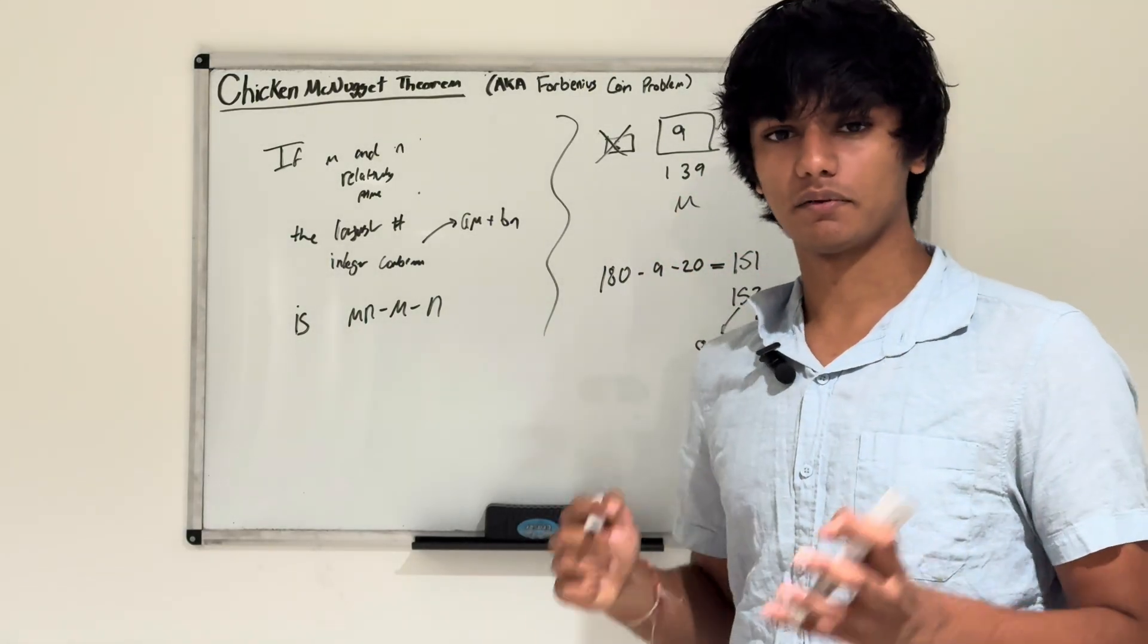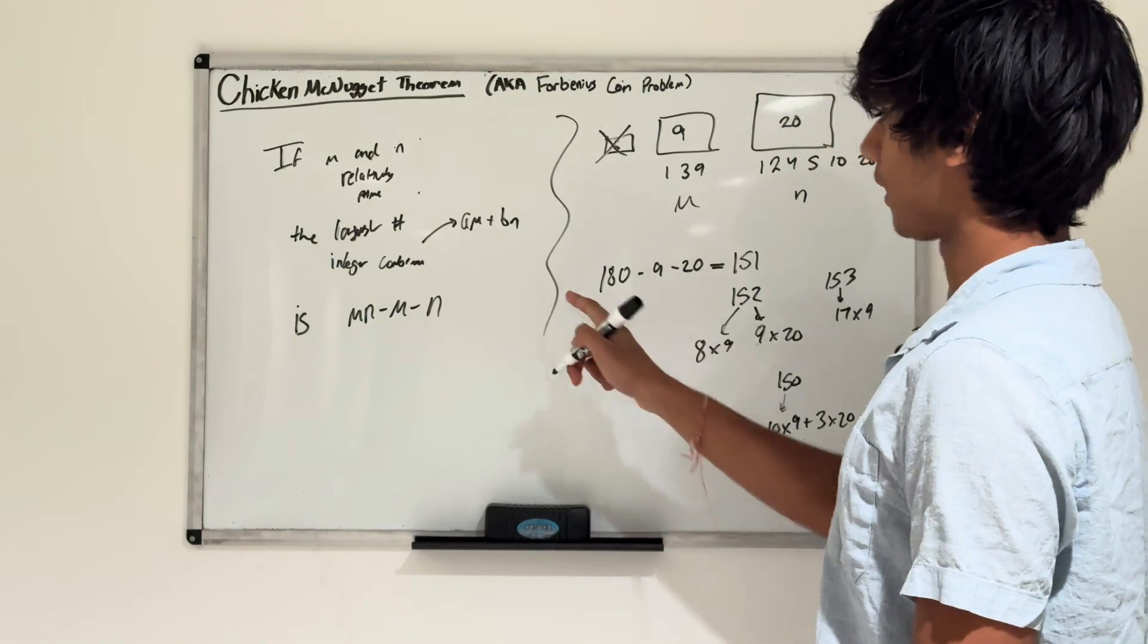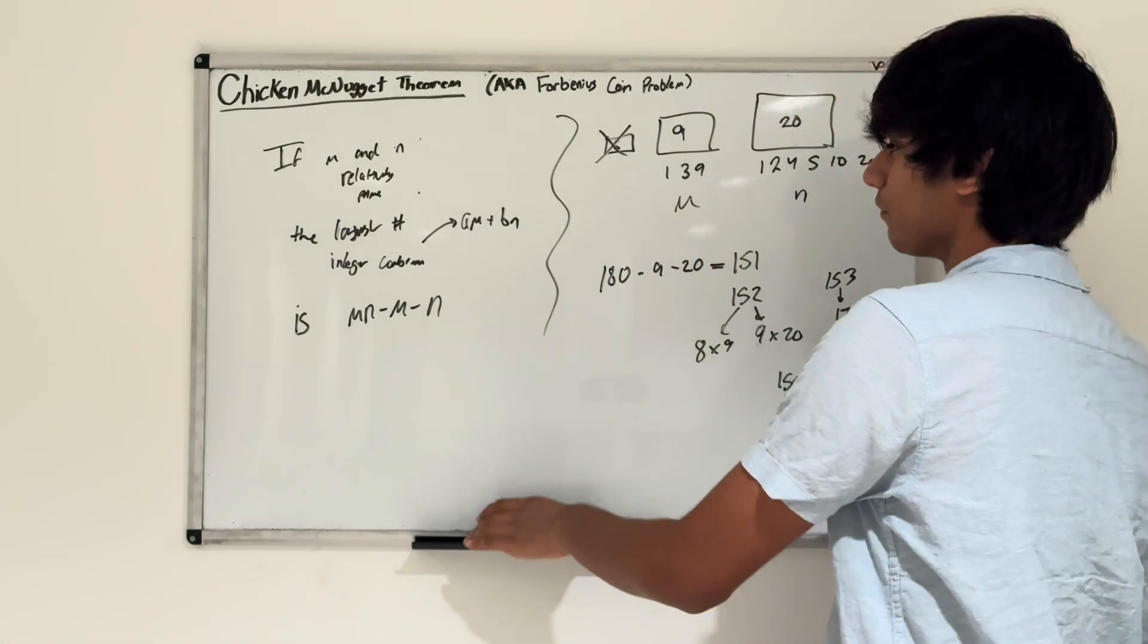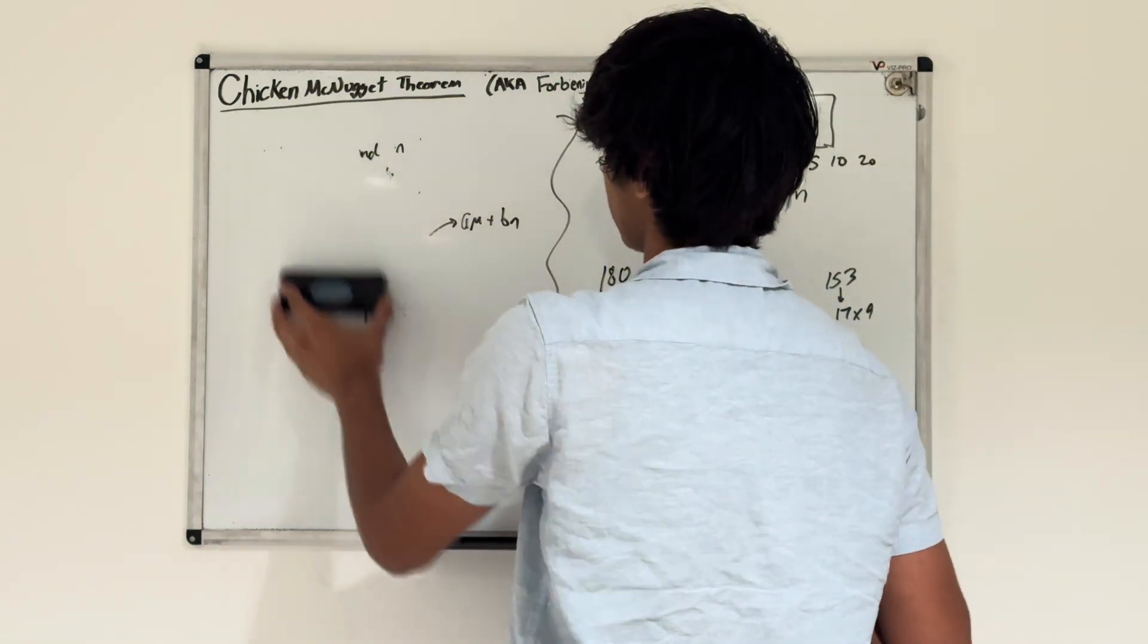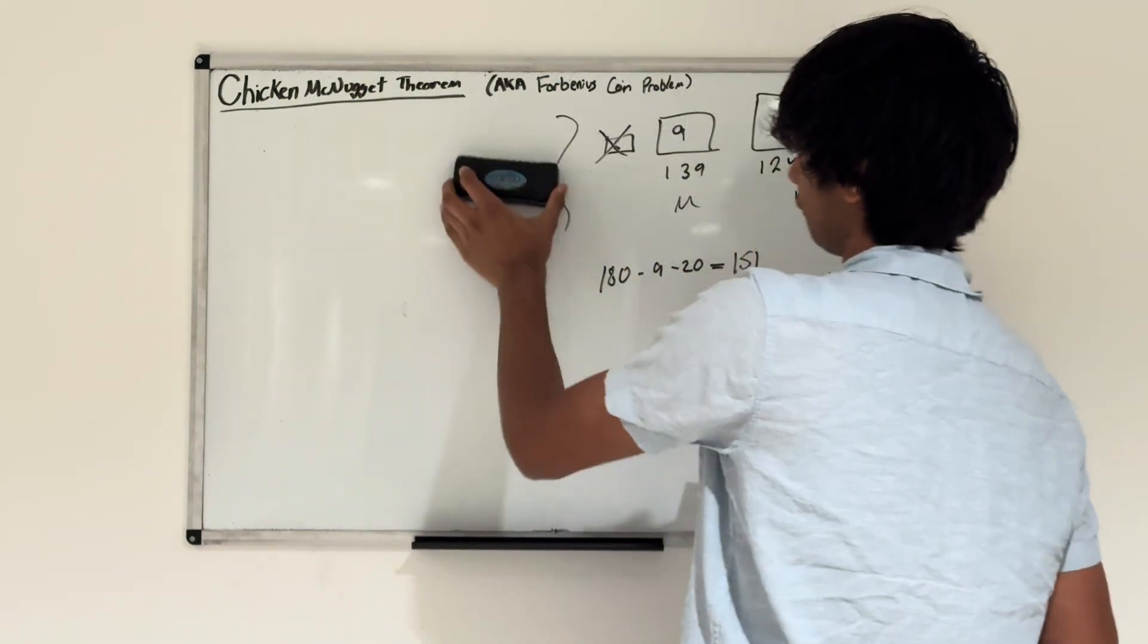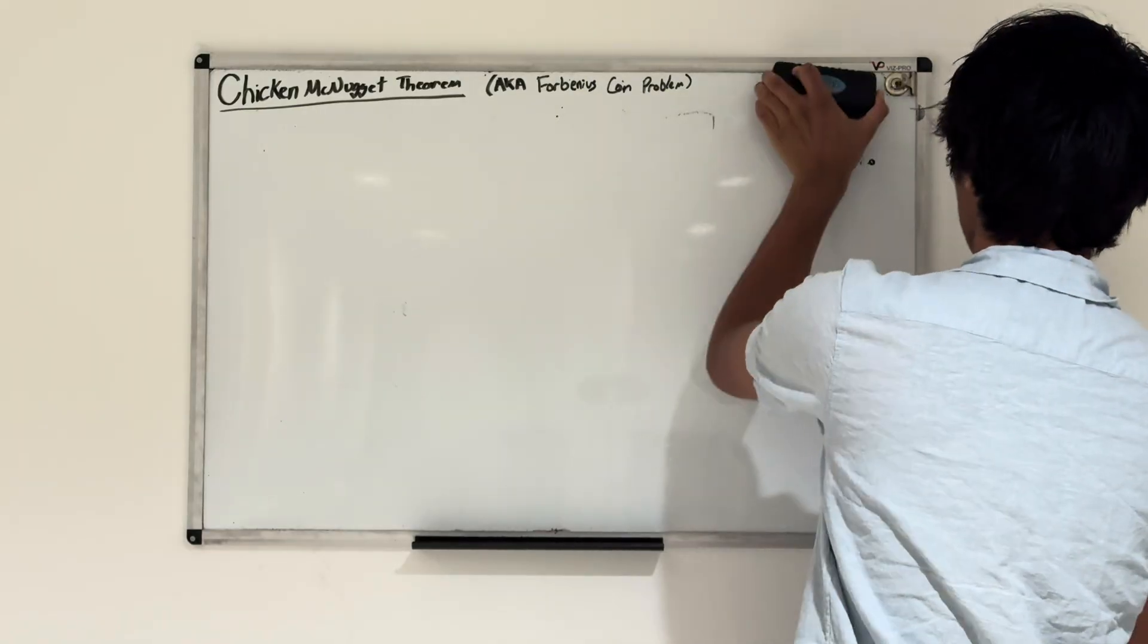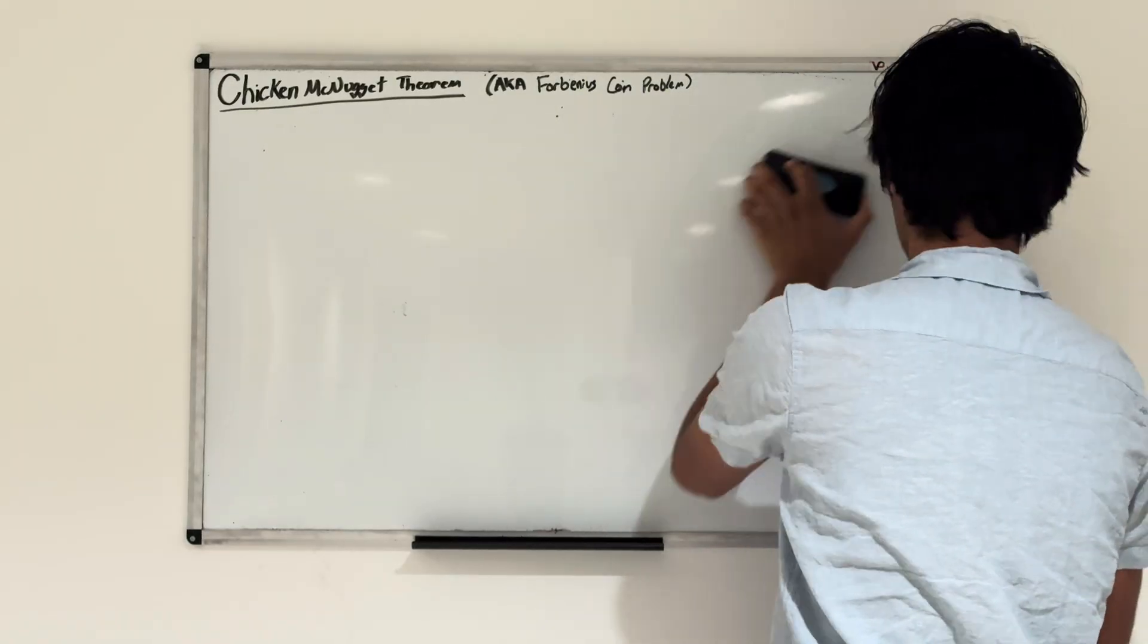So 151 is the largest number we can't fill based on sizes 9 and 20. That's basically what the Chicken McNugget Theorem does and where it comes from - this problem concerning chicken McNuggets. Now let's go over a harder problem from the AMC, the American Math Competition.